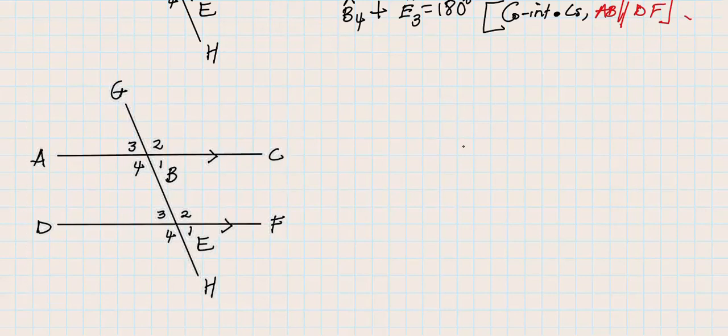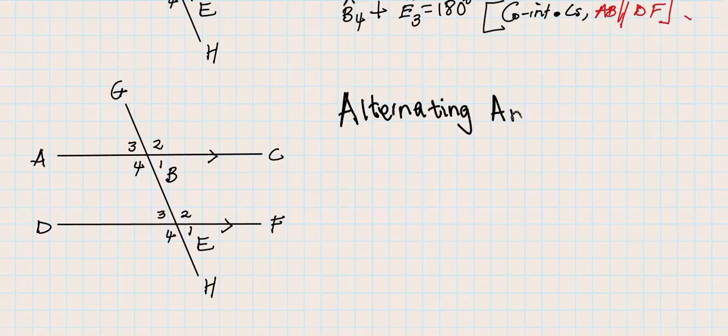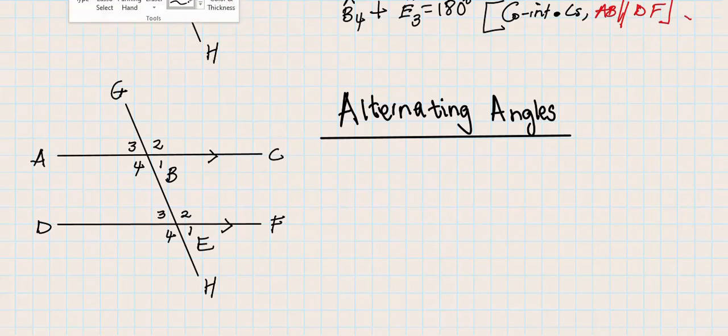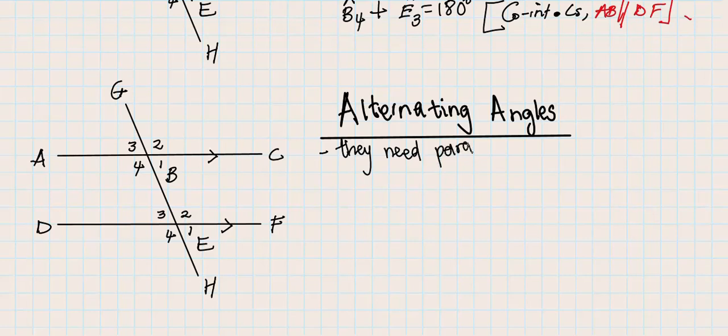Moving on, we want to talk about alternating angles. What we know about alternating angles is that they need parallel lines, and they are equal.